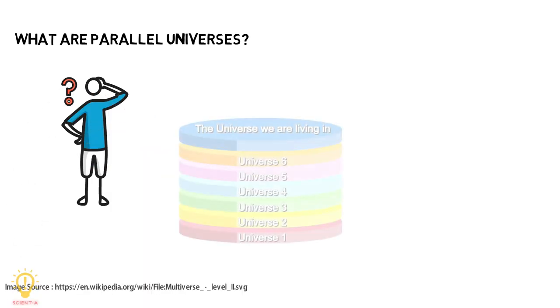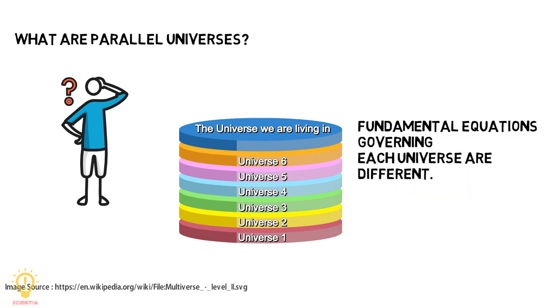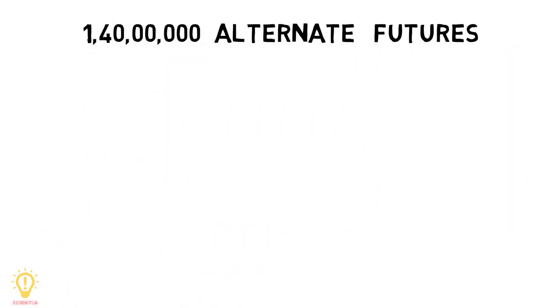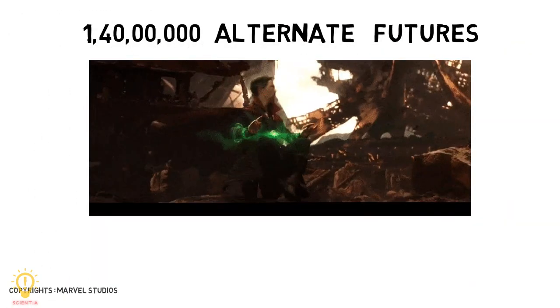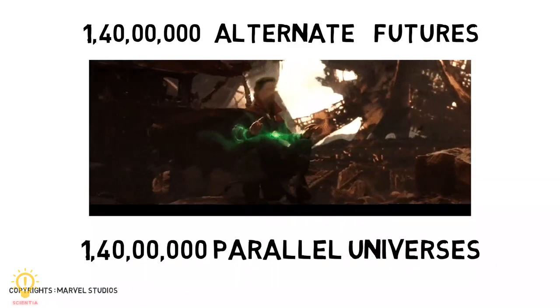Parallel universes are universes that exist parallel with our own universe, but have different physics and mathematics governing them. Remember the 14 million alternate futures Dr. Strange viewed in Avengers Infinity War? Those were 14 million parallel universes with 14 million alternate realities.